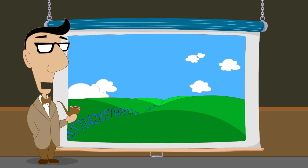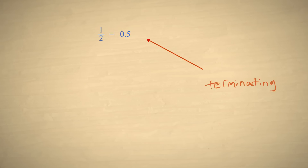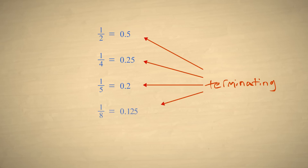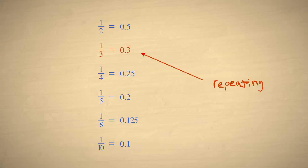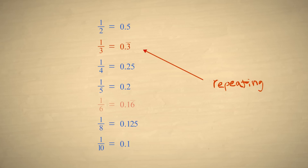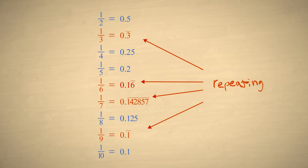Some unit fractions, when written in decimal form, can be represented with a finite number of digits, while others cannot. For instance, the fractions one-half, one-fourth, one-fifth, one-eighth, and one-tenth can be written with a finite number of digits. On the other hand, the decimal equivalent of one-third is a decimal point followed by an infinite number of threes. One-sixth is a decimal point followed by a one, and then an infinite number of sixes. One-seventh is a decimal point followed by the infinitely repeating sequence 1, 4, 2, 8, 5, 7. And one-ninth is a decimal point followed by an infinite number of ones.